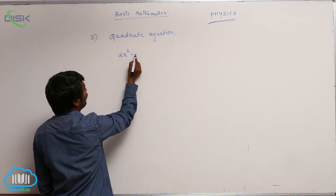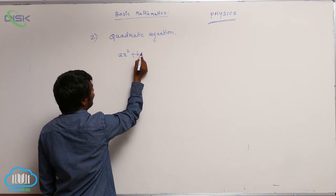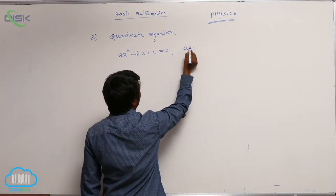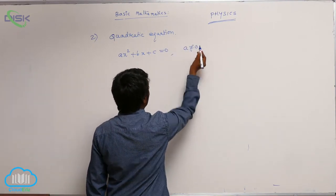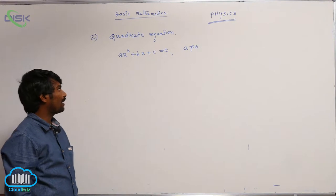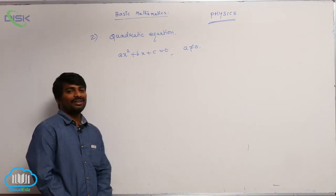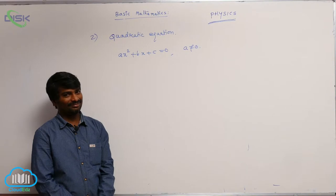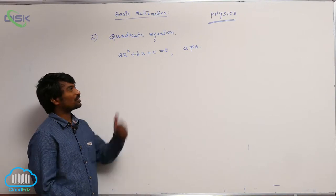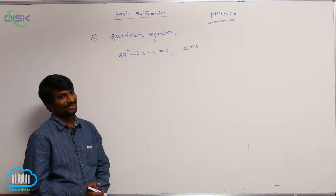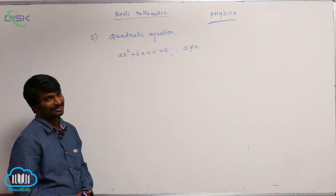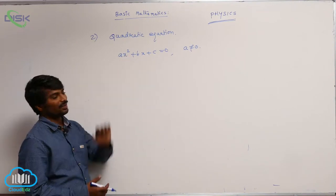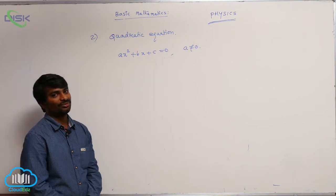The second topic is: A x squared plus B x plus C equal to 0, where A is not equal to 0, is called a quadratic equation. We have to find the solution of this equation, or roots of this equation. What do we mean by solution or roots? The values of x which satisfy this equation — we have to find those.